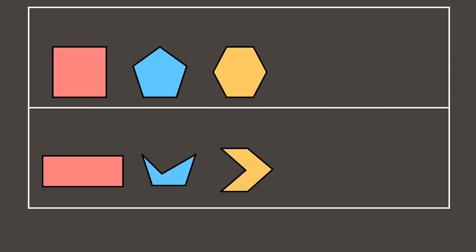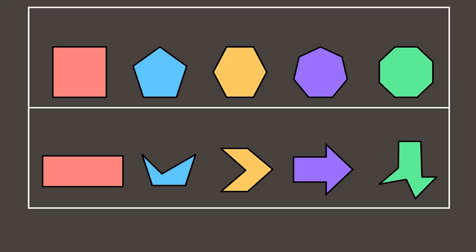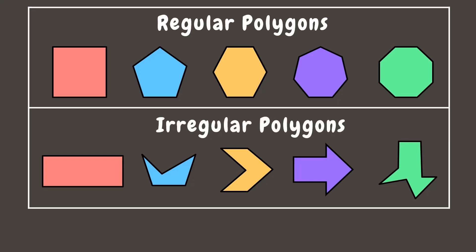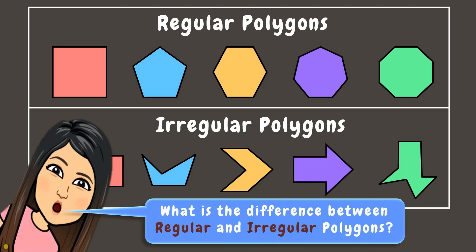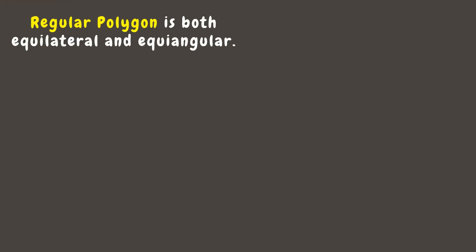The first set of figures are examples of regular polygons, while the second set of figures below are examples of irregular polygons. By simply observing the two sets of polygons, can you tell the difference between regular and irregular polygons? Let's find out. A regular polygon is both equilateral and equiangular.